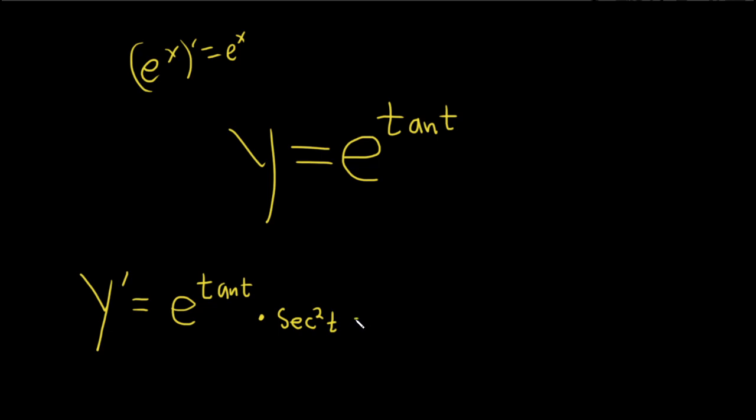And if you want, you could leave it like this, but maybe I'll go ahead and put the secant squared in the front. And then here we have e to the tan t.